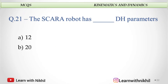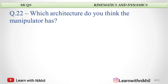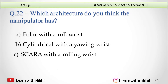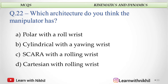The Scara robot has 4 degrees of freedom, and 4 multiplied by 4 gives 16 kinematic parameters. Which architecture does the manipulator have: polar with a roll twist, cylindrical with a yawing twist, Scara with a rolling wrist, or Cartesian with a rolling wrist? The answer is cylindrical with a yawing twist.